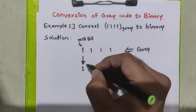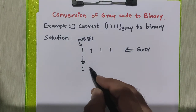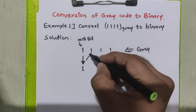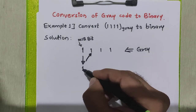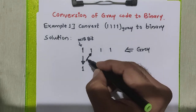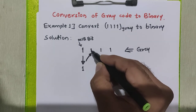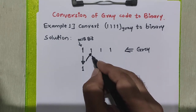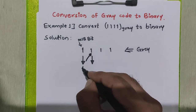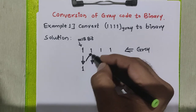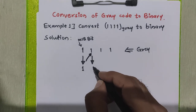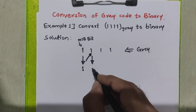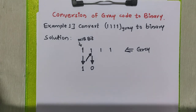To obtain the next binary bit, we have to add this first bit of binary with the second bit of grey. So the first bit of binary is added with the second bit of grey code to get the second bit of binary. One plus one is zero with carry one, so we write zero here — carry is ignored.